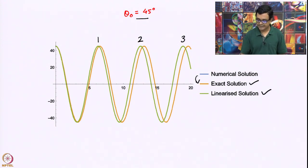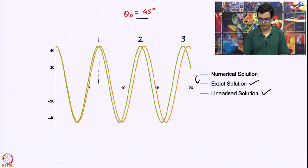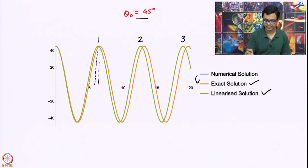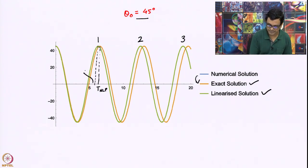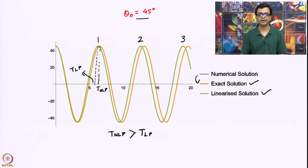The time it takes for the nonlinear or exact solution to complete one time period is slightly more than 6 units, whereas the time that the linear solution would take is slightly less. This is T_NLP and this is T_LP, and we have confirmed that T_NLP is greater than T_LP, which is consistent with what we saw from our approximate expression.